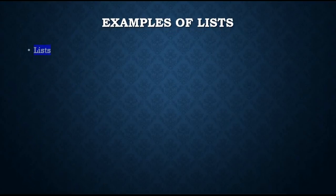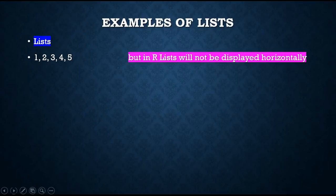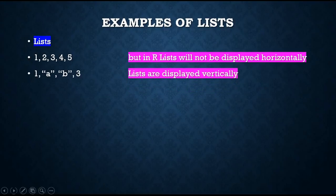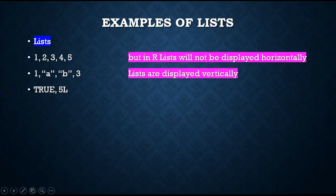Now examples of lists. Lists can hold multiple types of data. Although by definition a list is the data structure that can hold multiple types of data, you can also create lists with same data types. For example, this one is a list that contains only numeric data. Lists will not be displayed horizontally in R — they will be displayed vertically. This is another example of a list containing numeric data as well as character data. Another example includes TRUE and 5L — this list contains logical data and integer data.